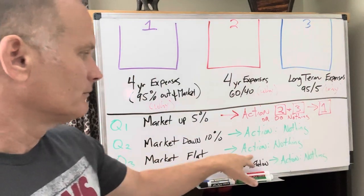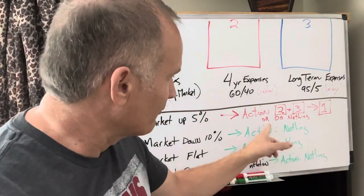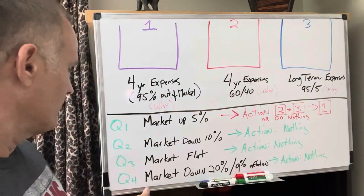Market is flat. Action: do nothing. Look, notice all the do nothings here. All four of these have do nothing in them.